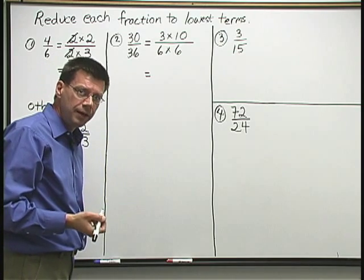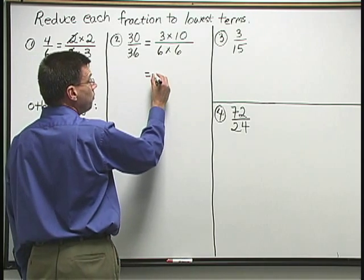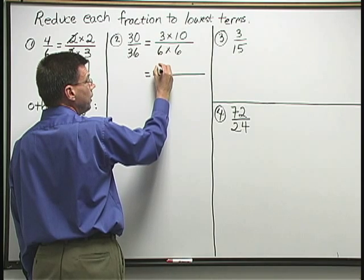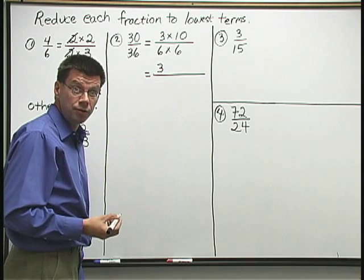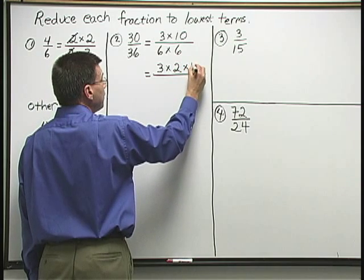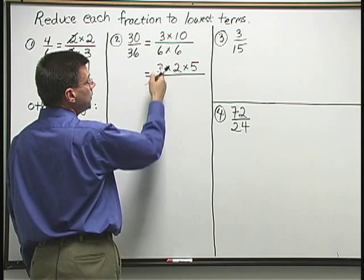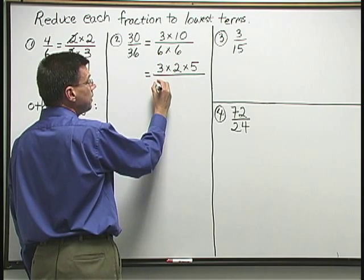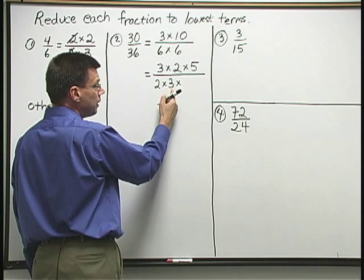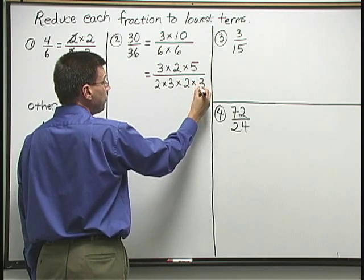That doesn't mean that I'm finished. What I need to do is continue breaking down the numbers that I see above and below. The 3 above is a prime number, I cannot break that down further, so I just recopy it. But the 10 above I can break down as 2 times 5. So I have 3 times 2 times 5 up above. Down below, each of the 6's I can break down as 2 times 3. So I end up with 2 times 3 from one of the 6's times another 2 times 3 from the other 6.